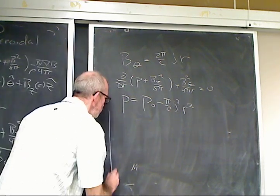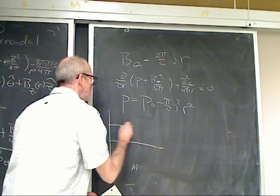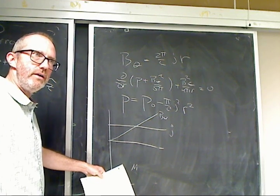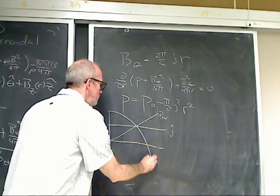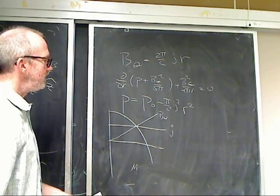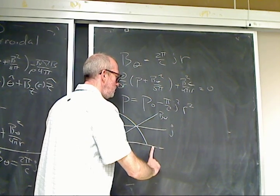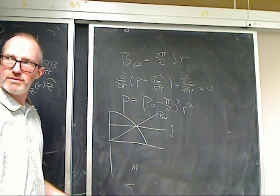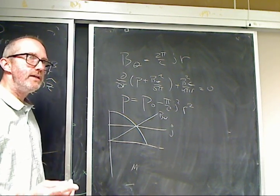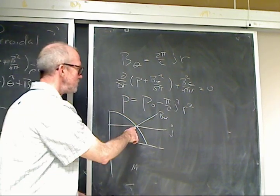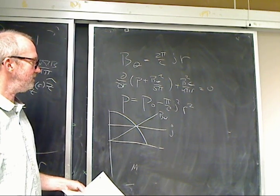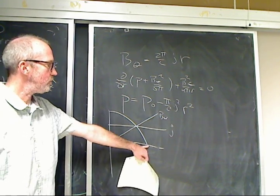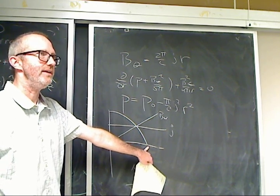What this looks like: the current is constant, the magnetic field just gets bigger with r, and the pressure falls off like a parabola. This is great because you can't have negative pressure, so the pressure goes to zero and stops — all the material is confined inside. That means there's a place where everything is contained inside the bottle, and nothing's leaving.